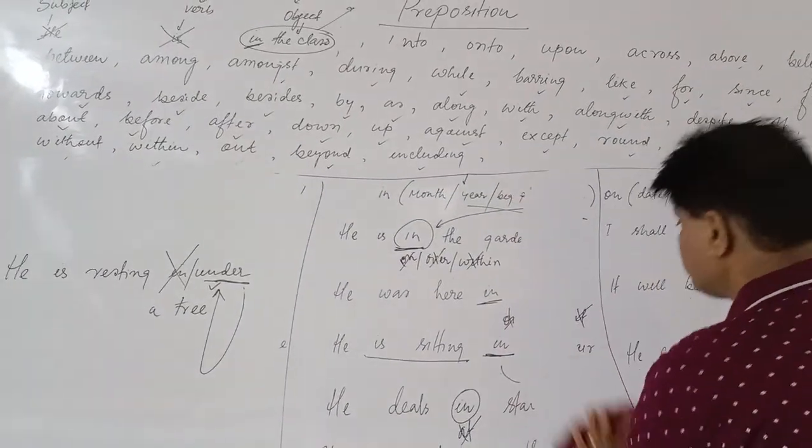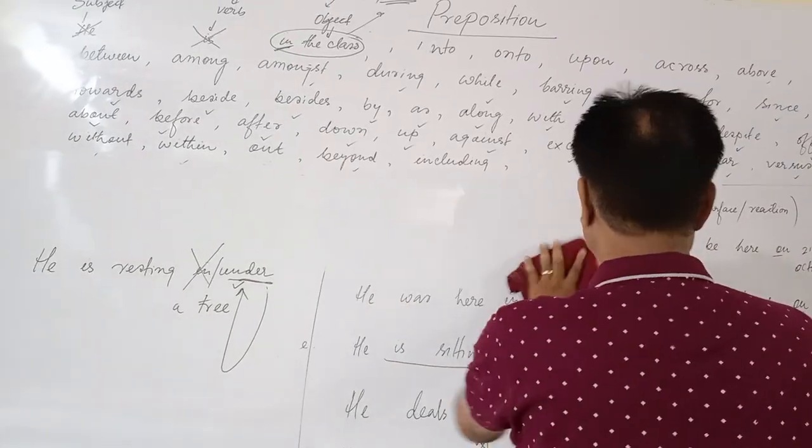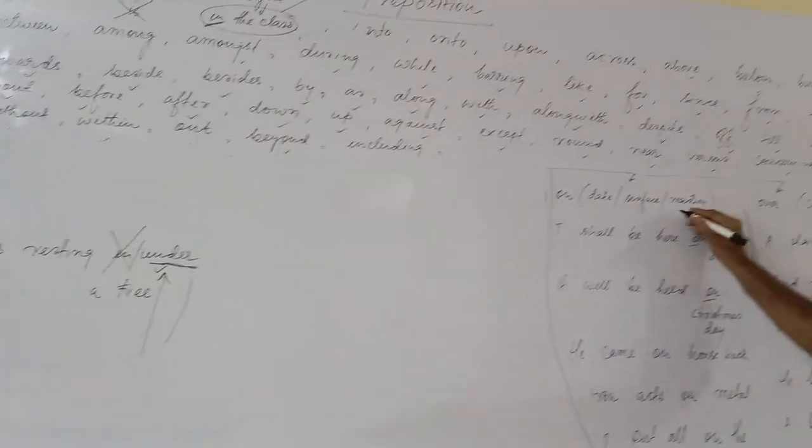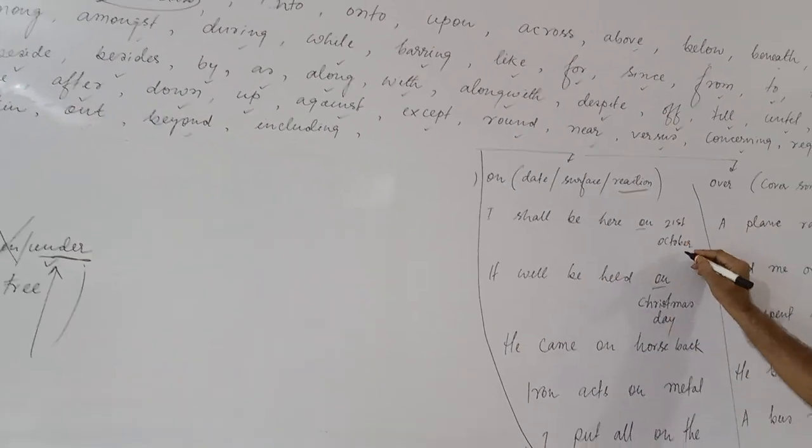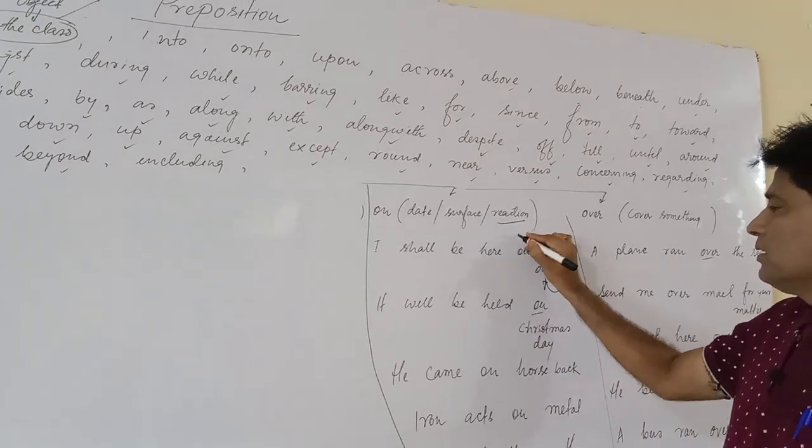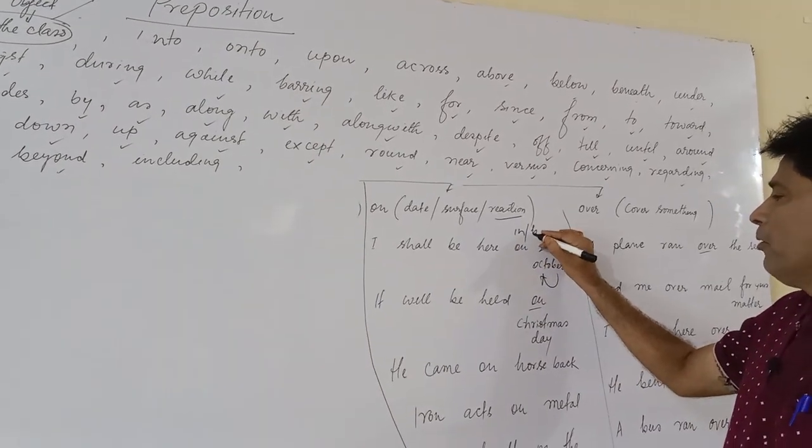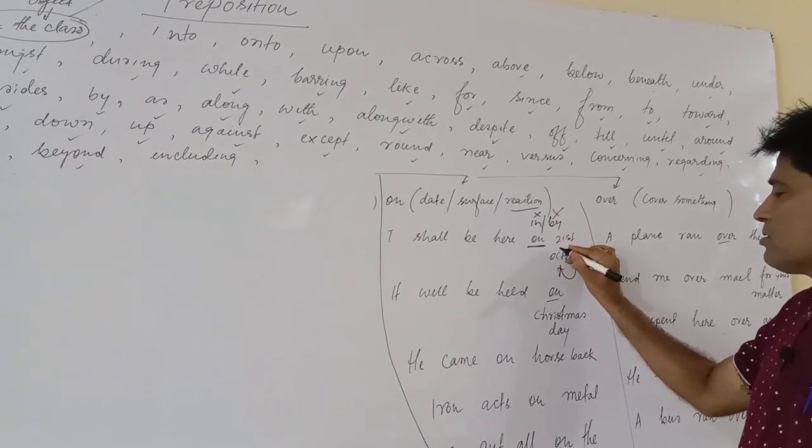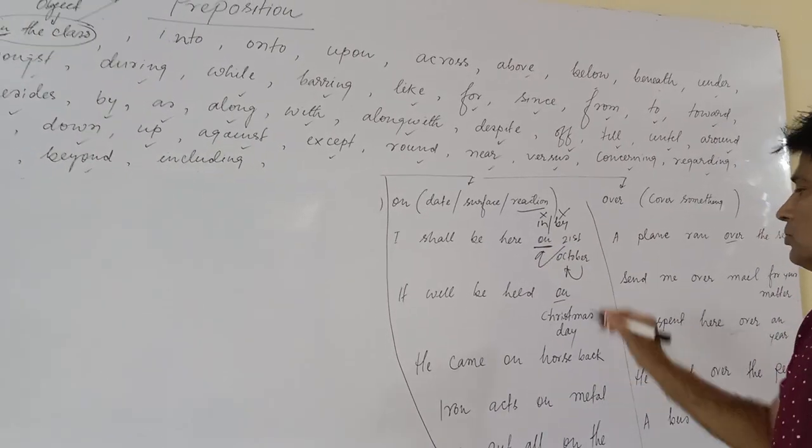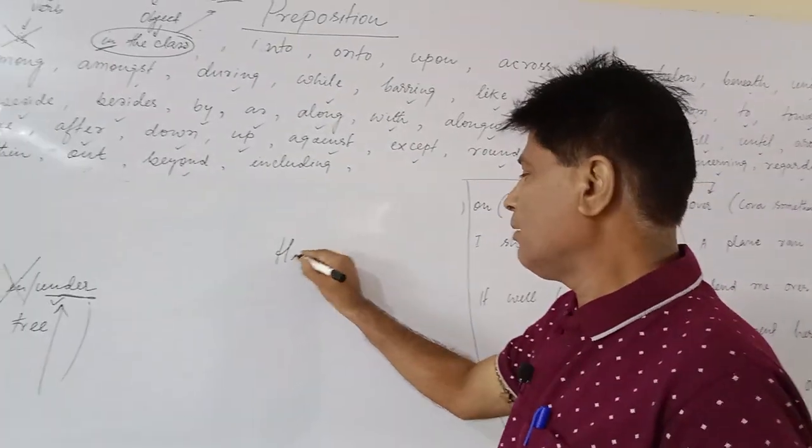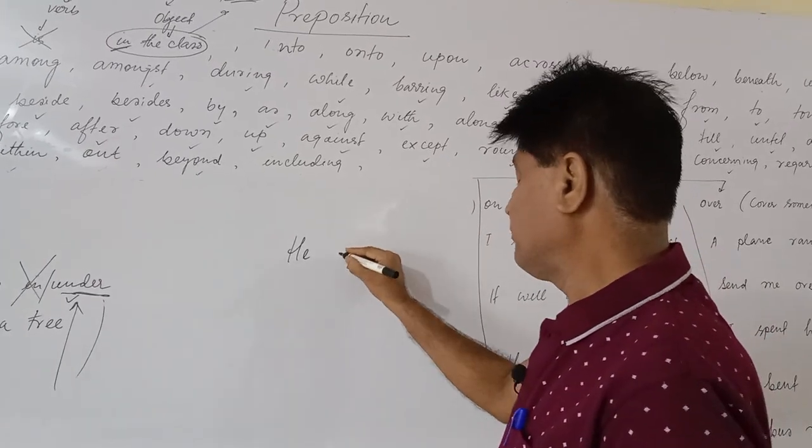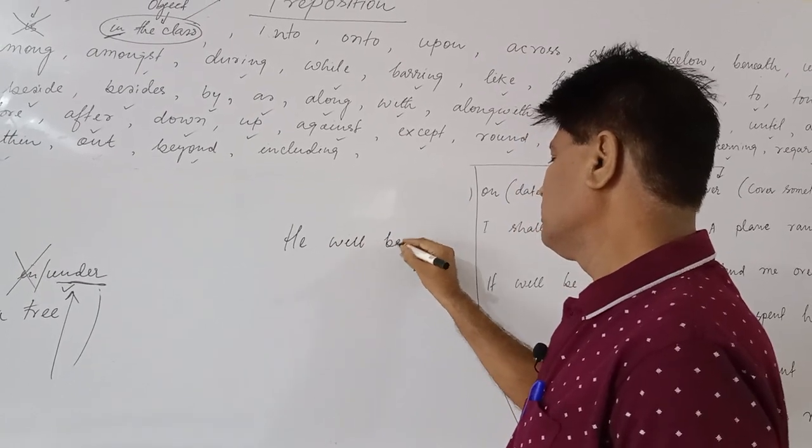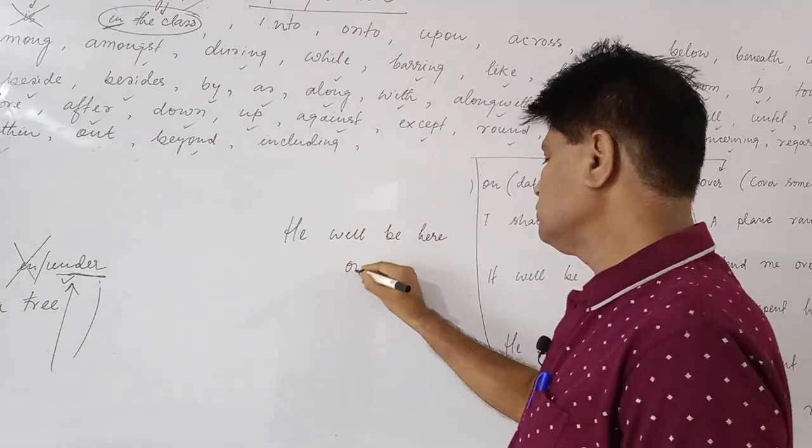As to explain about on, on is used in the case of date and surface or reaction. In that condition, I shall be here on 25th October. In that condition, in will be non-applicable or by will not be correct, incorrect. On will be correct. In the case of date, you have to use on. But before a place, before a day,